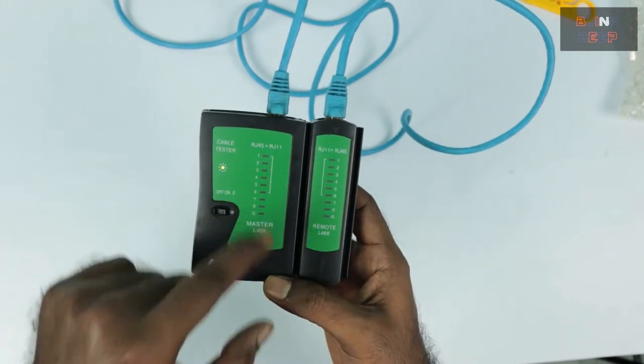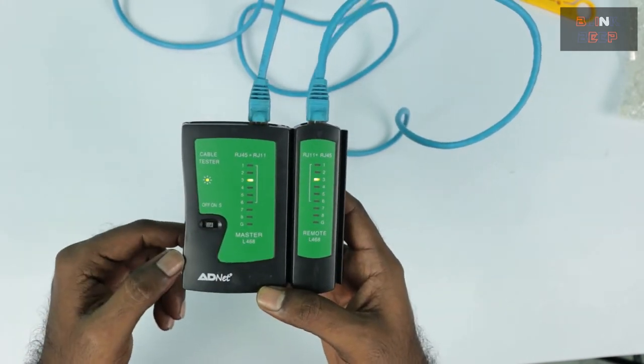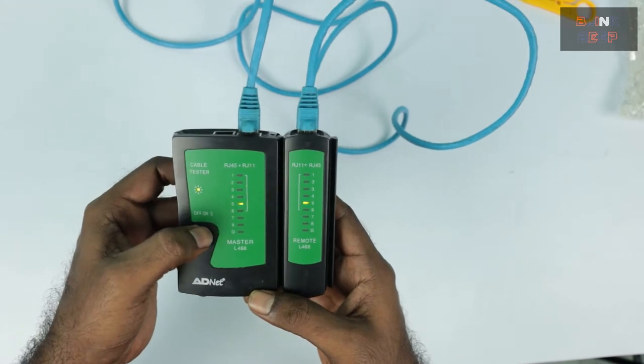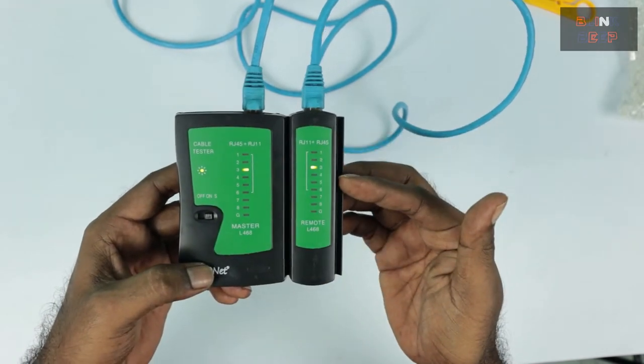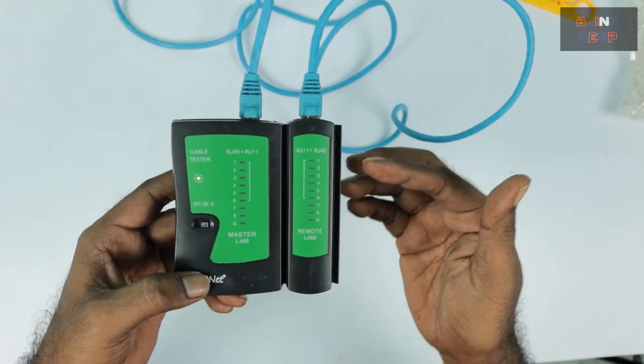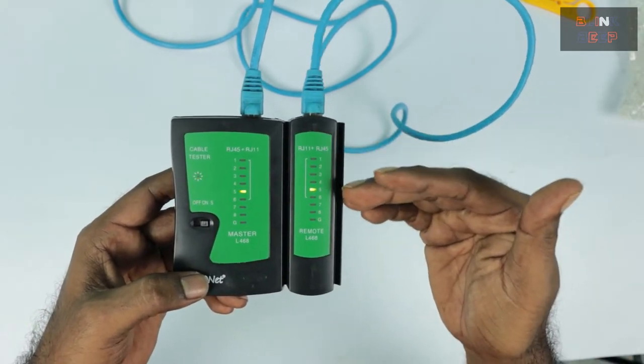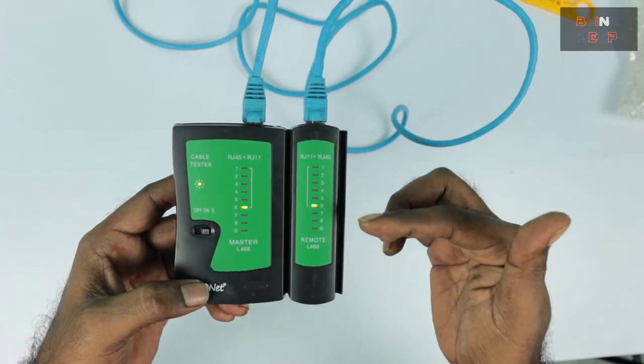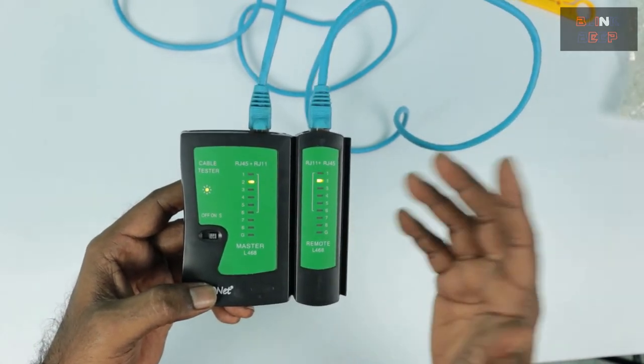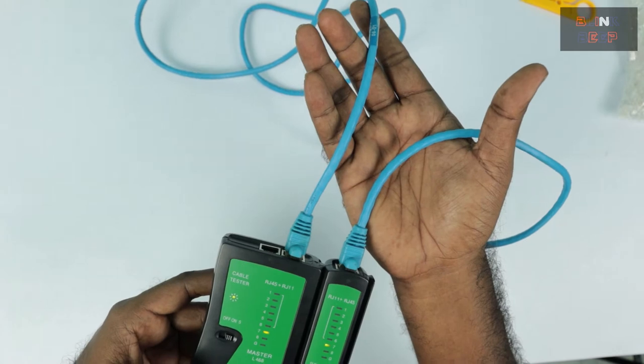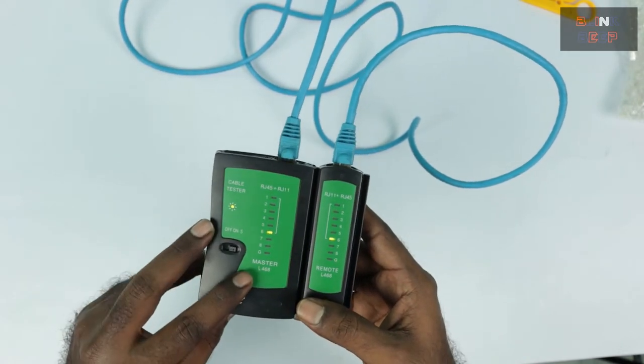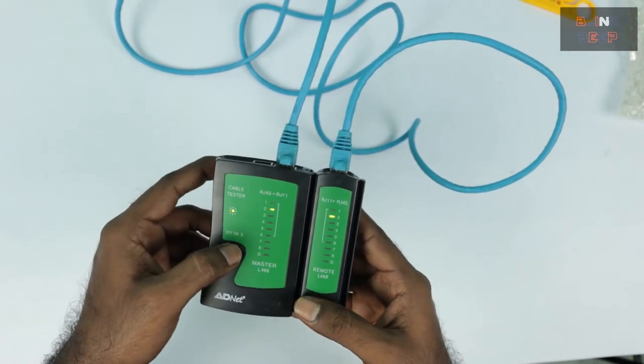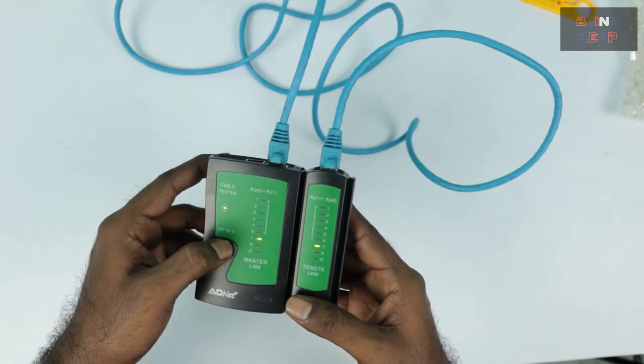The S here denotes that it will give us the output in slow motion. So once I press that you see the lights going slowly. That means it's the same thing but just gives us the slower vision: 1, 2, 3, 4, 5, 6, 7 and 8. So that means this cable is working fine and the testing tool is also working fine. With that we will get started with our own crimping.